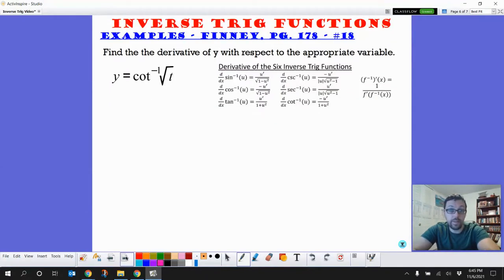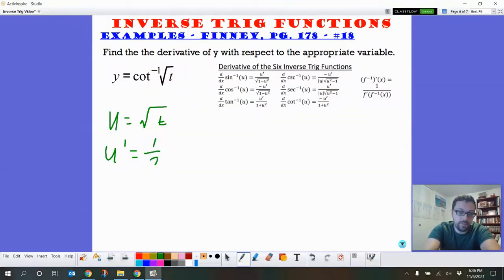So okay, last one. Find the derivative. We've got cotangent. Let's do our inside bit. Inside bit is u equals the square root of t. We actually might be able to do something interesting. u prime is going to be the derivative of that, so that's going to be 1 half t to the negative 1 half, so that's 1 over 2 square roots of t.